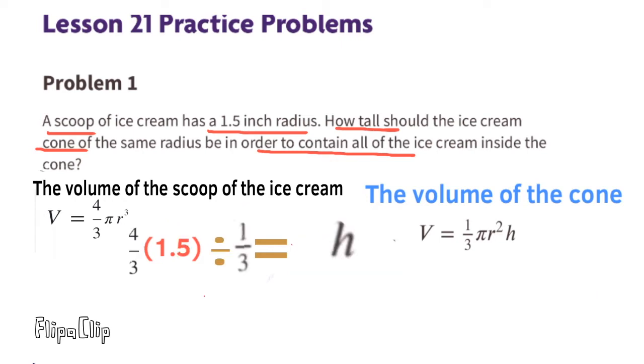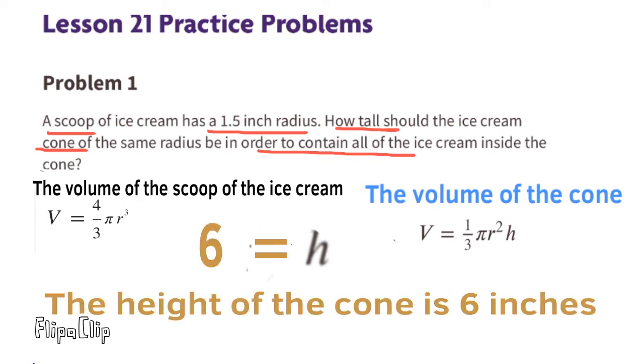What we're left with on the left hand side is dividing fractions. And remember, when we divide fractions, we need to multiply by the reciprocal of the second fraction. And what we're left with is 4 times 1.5, which is 6. The height of the cone would have to be 6 inches in order to contain all the ice cream.